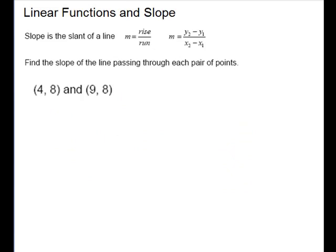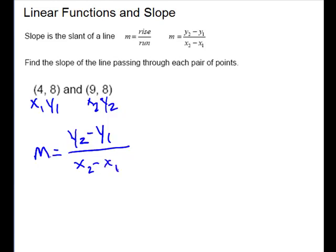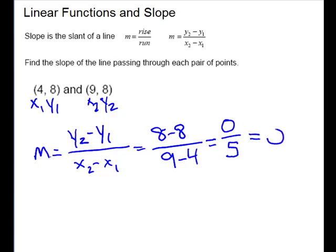Another example to do. They're giving us one of each case. So they're giving us two points. They want the slope. Label your points. X1, y1. X2, y2. Write your formula. Change in y's over change in x's. Plug in. Y2 is 8 minus y1, 8 over x2, 9 minus 4. This time we get a 0 in the numerator. So it really doesn't matter what the denominator is. This one is 0.